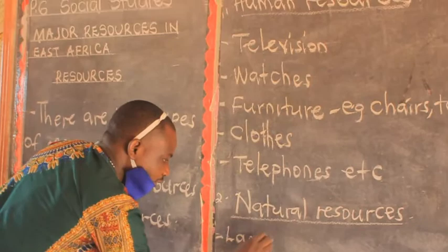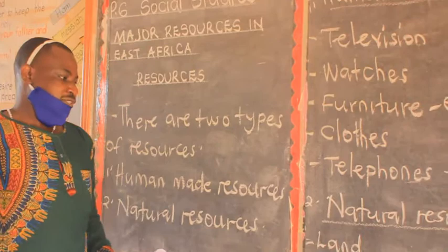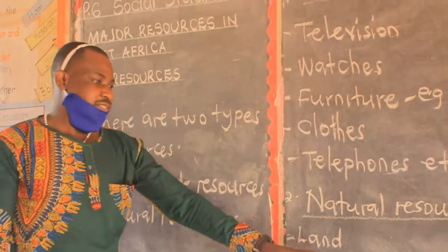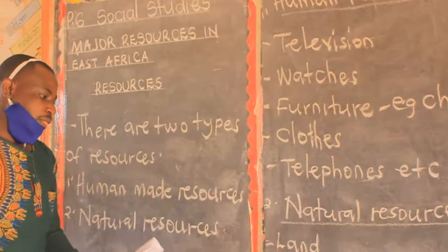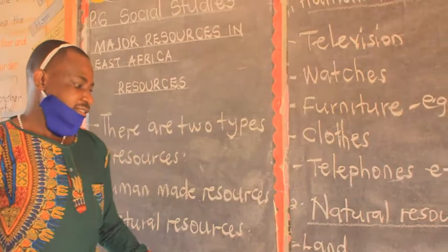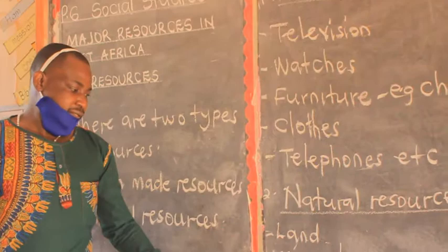The first example of natural resources is land. Land is considered the most important resource because all human activities are carried out on land. The second example is minerals — valuable substances formed in the earth's surface. Examples include copper, zinc, clay, and phosphate. There are very many examples of minerals in Uganda.